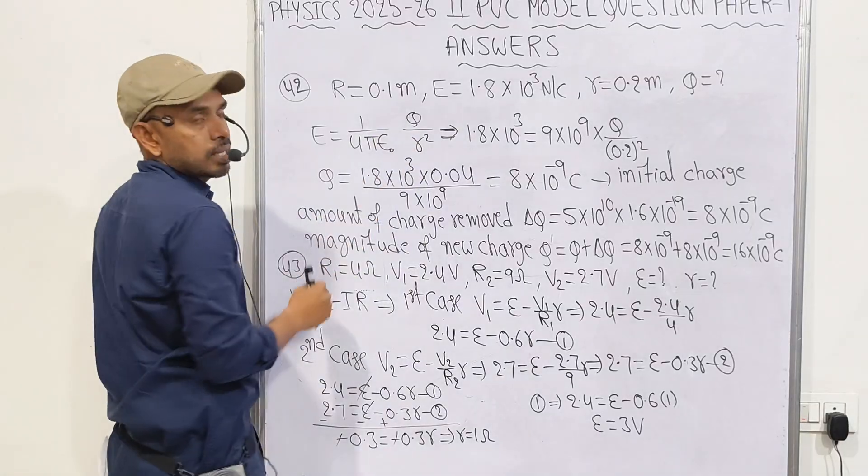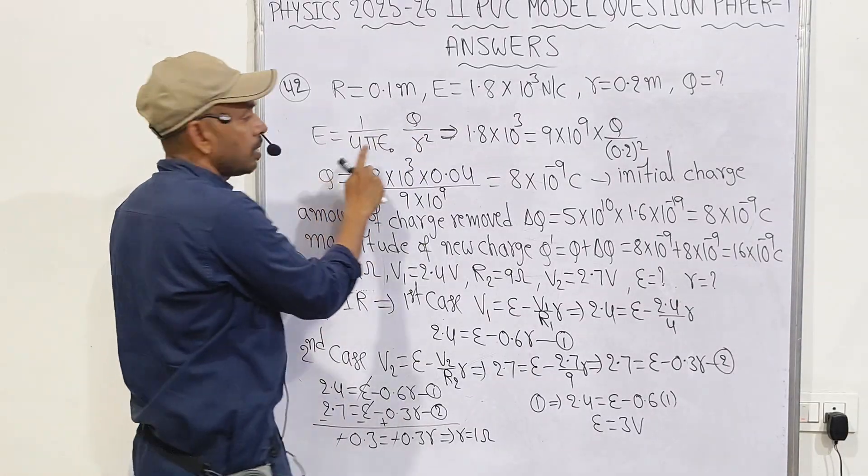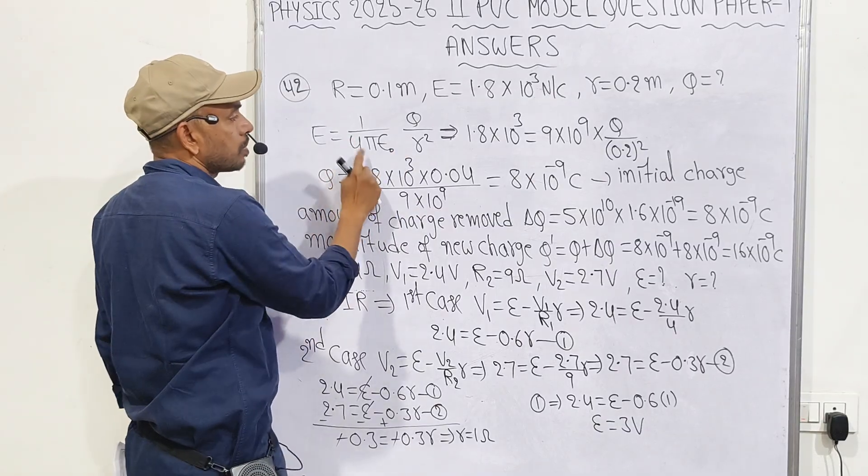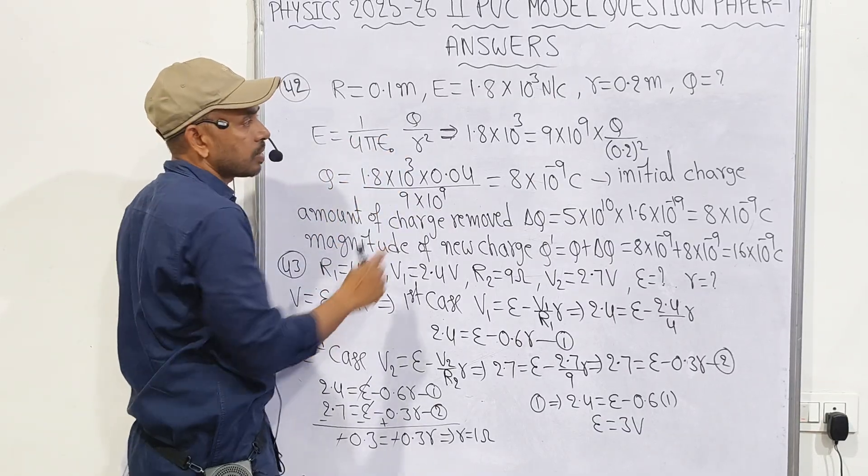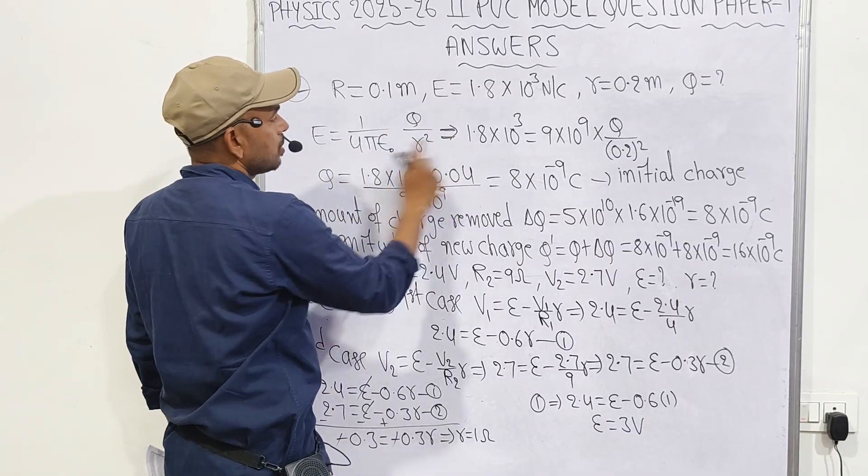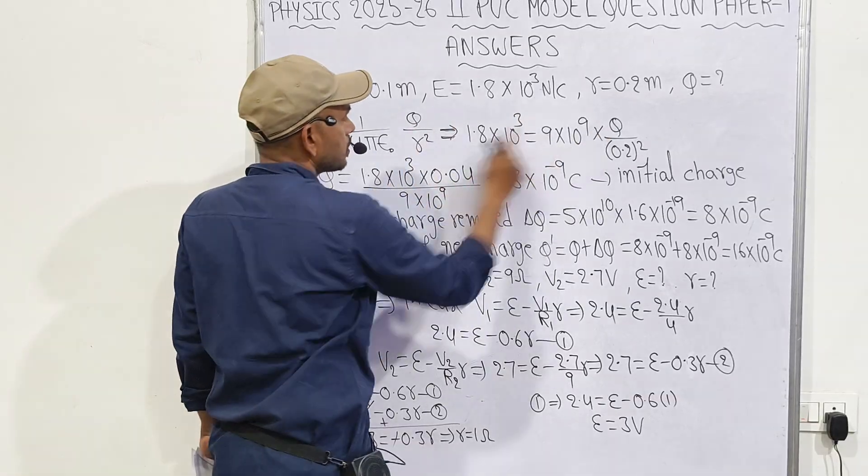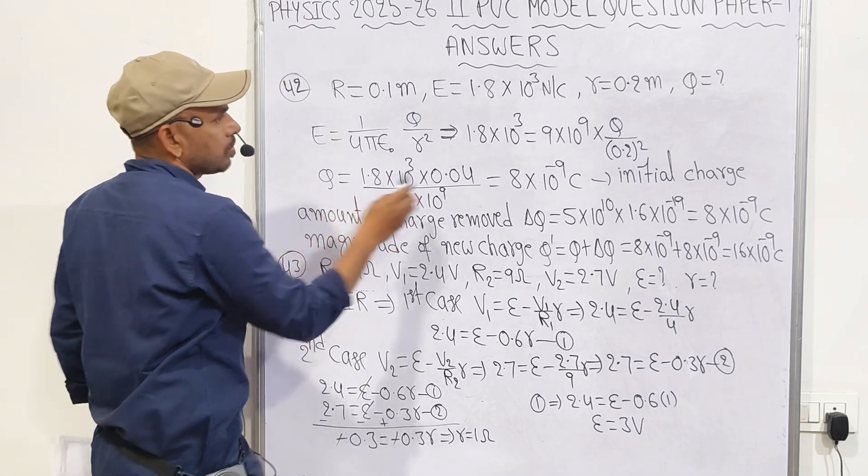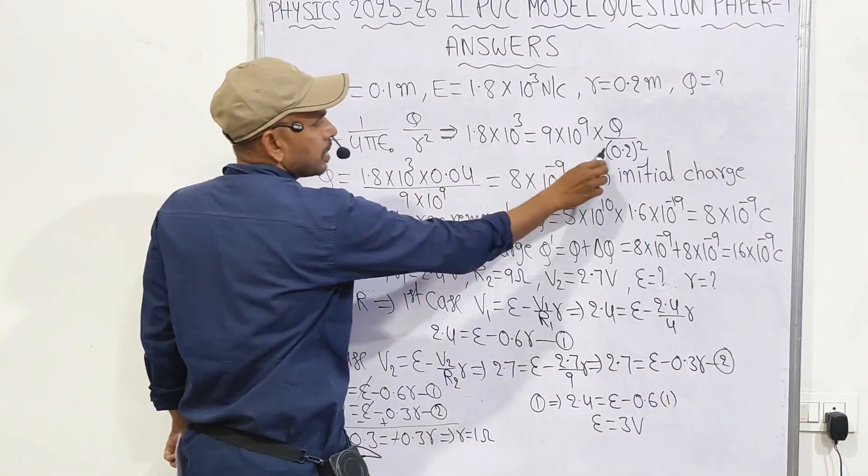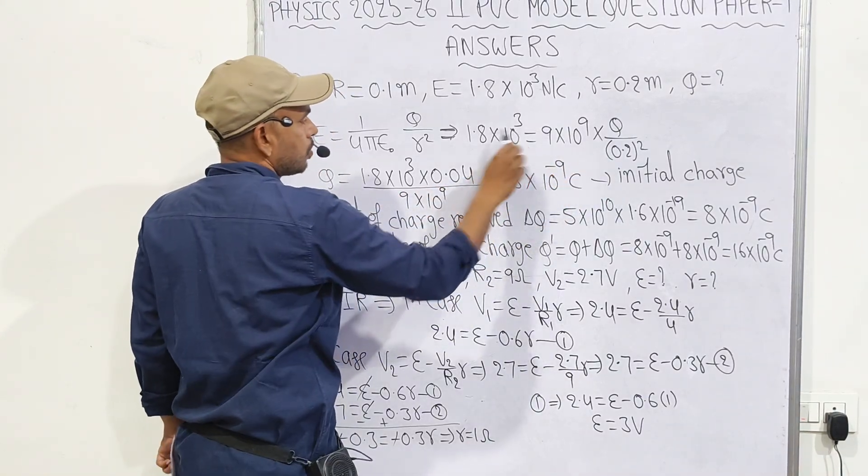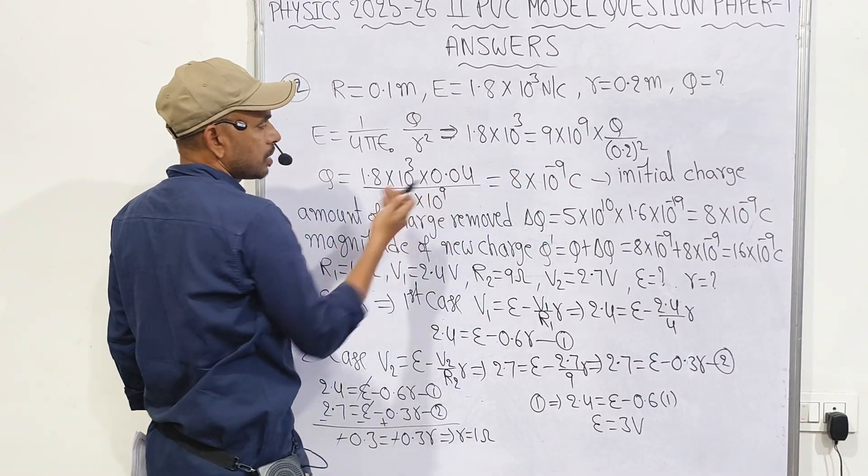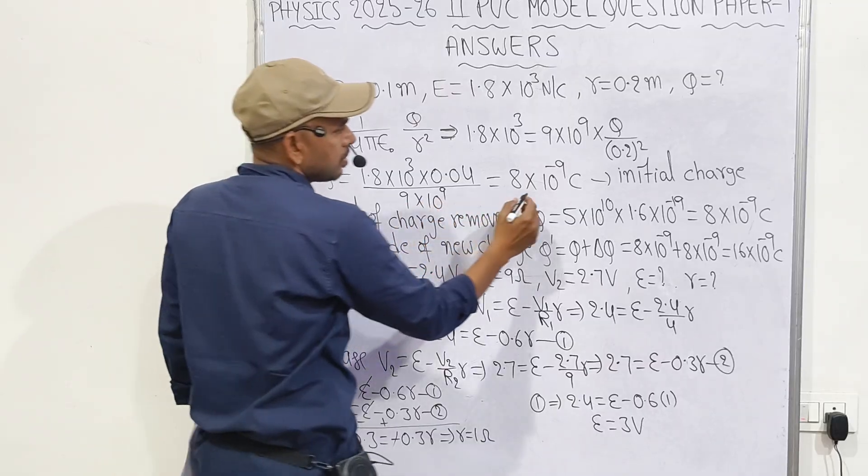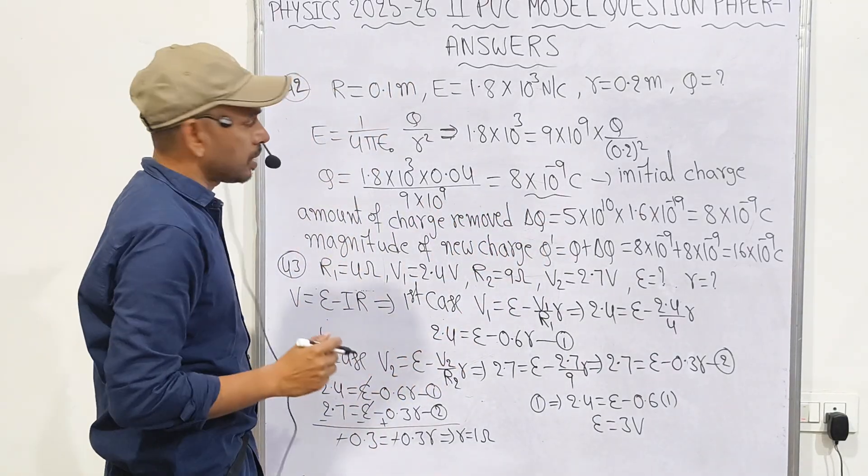A positively charged spherical conductor of radius 0.1 meter, electric field given at distance 0.2 meter, means outside the spherical conductor. Electric field at 0.2 meters is given. What is the initial charge? Second question: also find magnitude of new charge if 5 into 10 power 10 extra electrons are removed. First, given data written. Formula: electric field outside spherical conductor E equals 1 by 4 pi epsilon naught Q by R square. Substituting values, R equals 0.2, we get Q. After simplification, this is the initial charge.